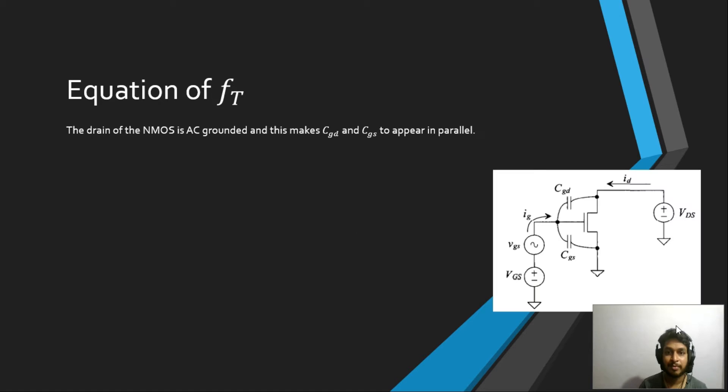Let's see and try to derive the equation of transition frequency. If you consider this figure on the right, you'll see that there is an NMOS device. We will derive the equation for NMOS transition frequency, considering that there are two capacitances: CGS between the gate and the source of the transistor, and a capacitance CGD between the gate and the drain of the transistor.